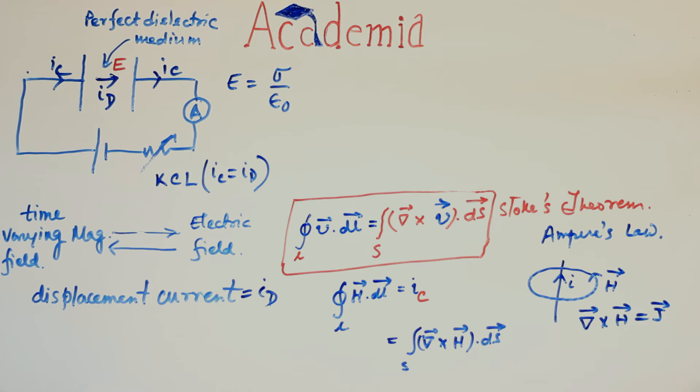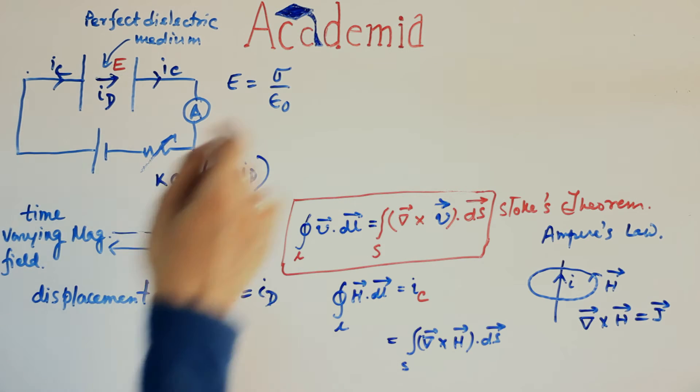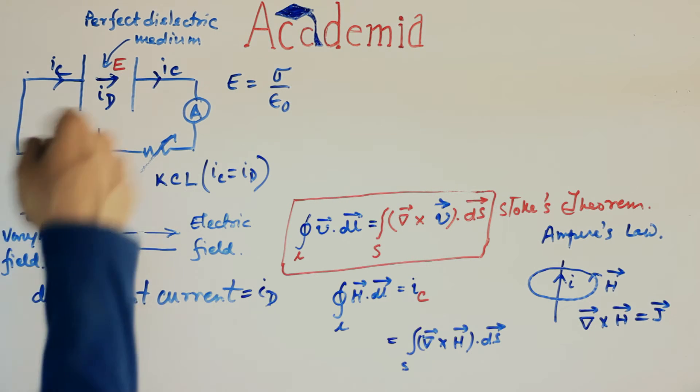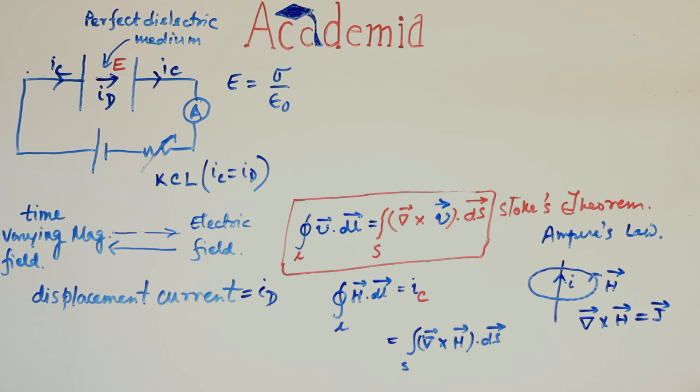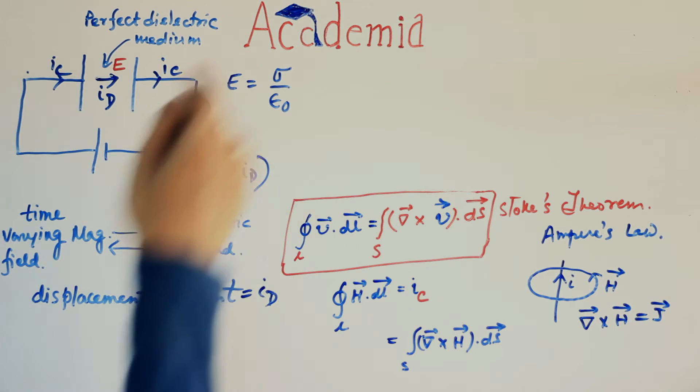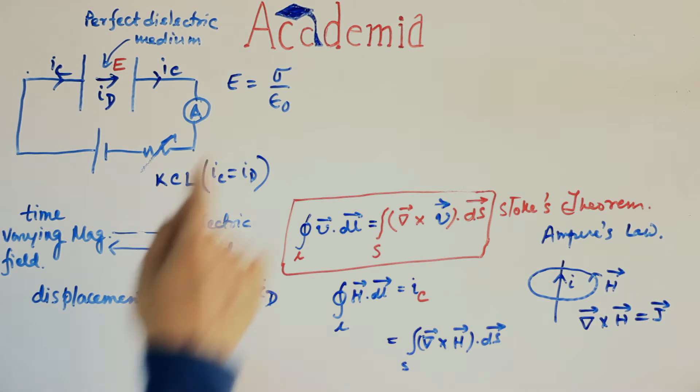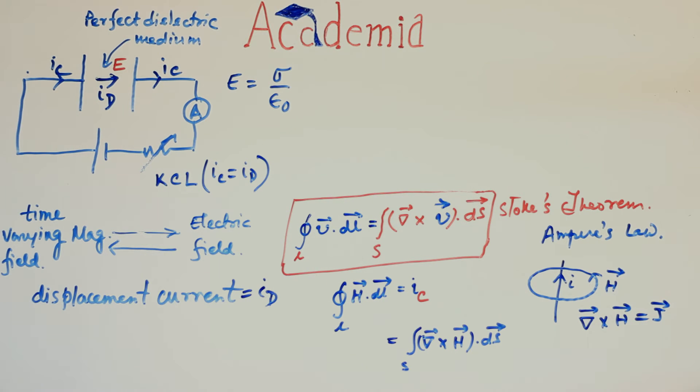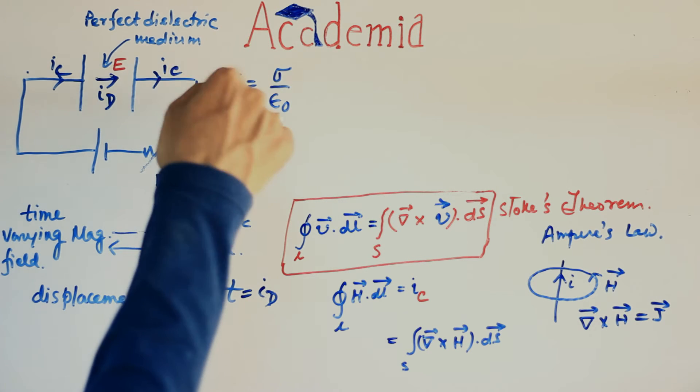Where sigma is charge density and epsilon0 is permittivity of the medium here. Since charge gradually increases in the charging procedure with time, so charge density sigma also increases with time. Since sigma is a time-varying quantity, so electric field E is definitely time-varying in nature.